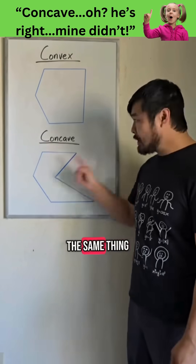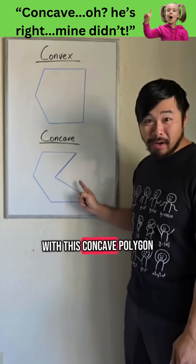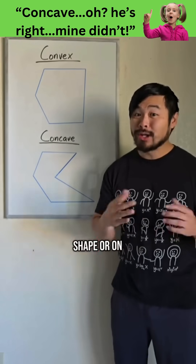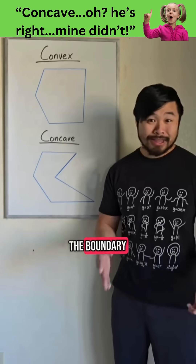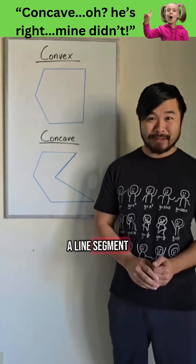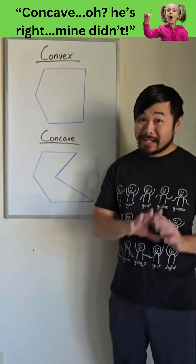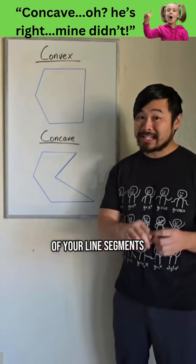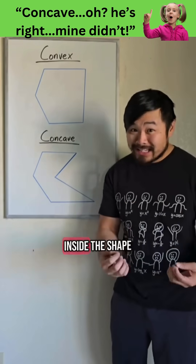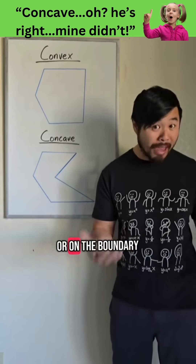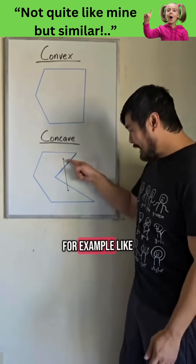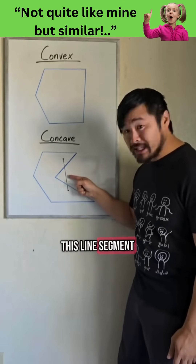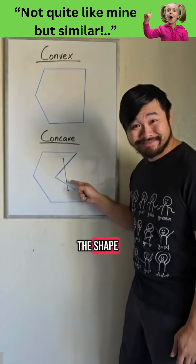Now let's do the same thing with this concave polygon. Pick any two points inside the shape or on the boundary, then connect those two points with a line segment. Now it's not guaranteed that all of your line segments will stay entirely inside the shape or on the boundary. For example, like this — part of this line segment lies outside of the shape.